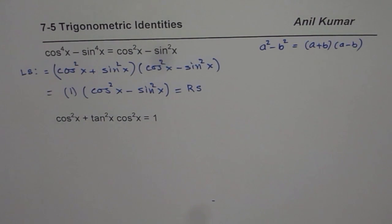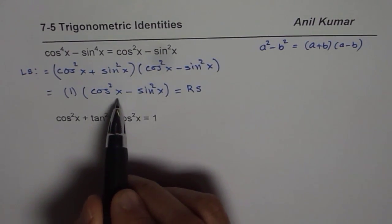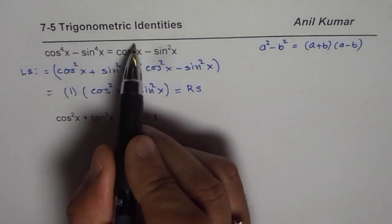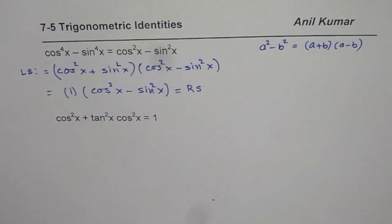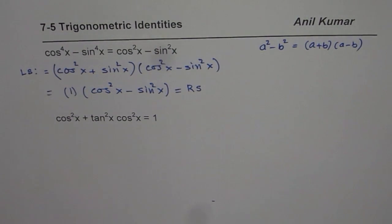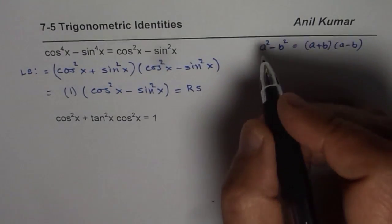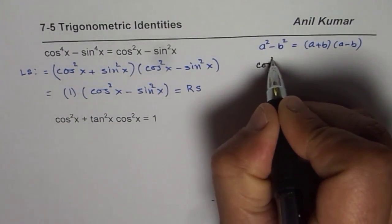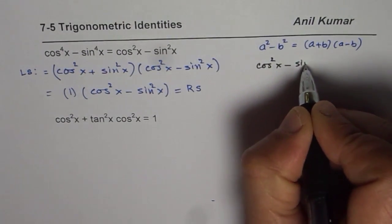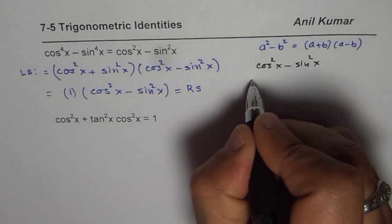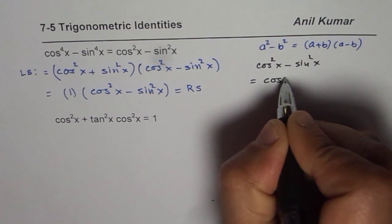Now at times you will have questions in your book or even in the test paper where we will extend this. You know cos square x minus sin square x can be written as, so let me write down on the right side, cos 2x.